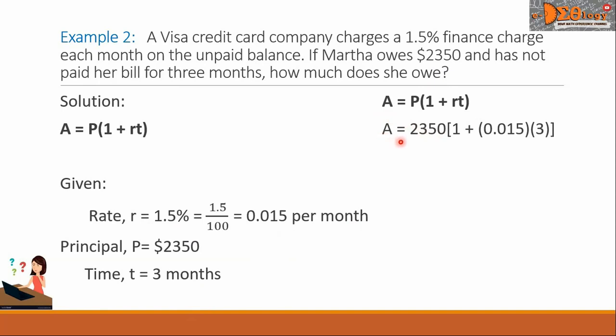A equals, the capital P, is now 2,350, times the quantity 1, we will copy that constant, plus the product RT. And R becomes 0.015, times the t, which is 3.